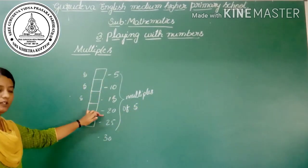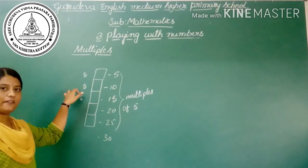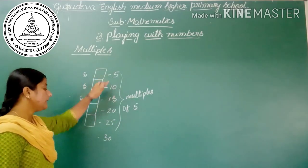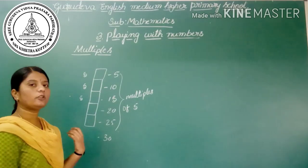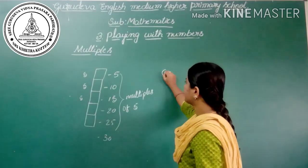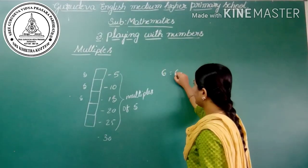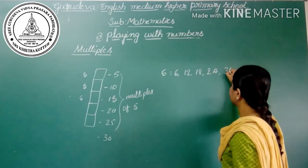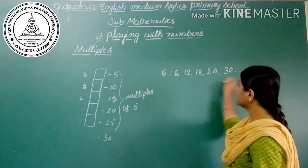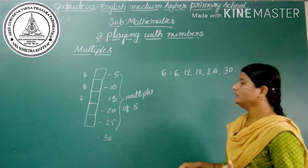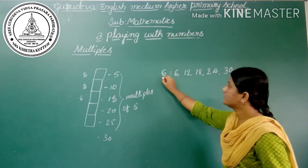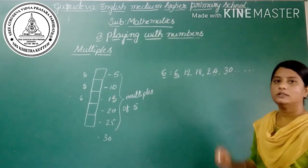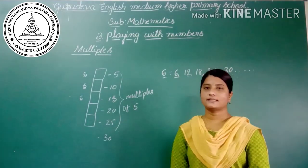5, 10, 15, 20, 25, 30 are the multiples of 5. We can observe that multiples of a number are equal to or greater than the number. Similarly, you can write the multiples of 6: the multiples of 6 are 6, 12, 18, 24, and we can write an infinite number of multiples of the given number.